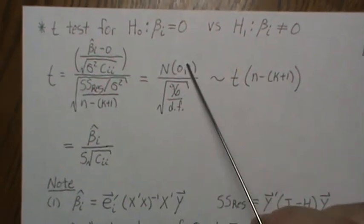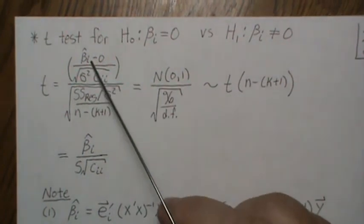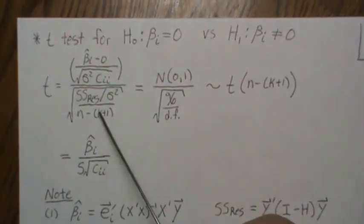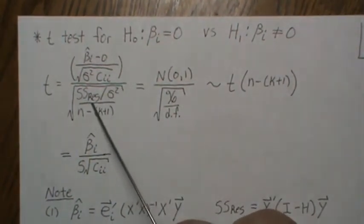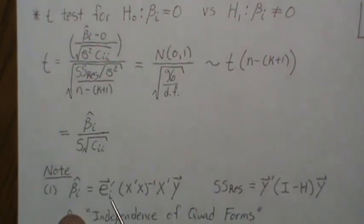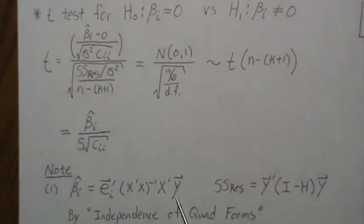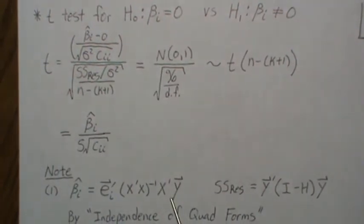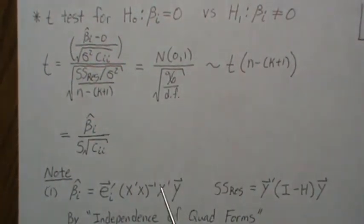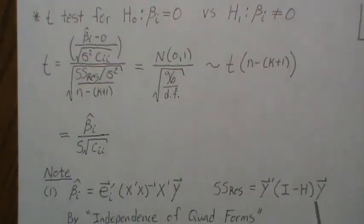Now let's see if they're independent. The only random component here is beta_i hat, and the random component here is the sum of squares residual. Beta_i hat is e_i transpose times beta hat, and this is the sum of squares residual.